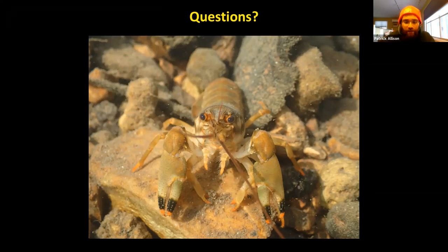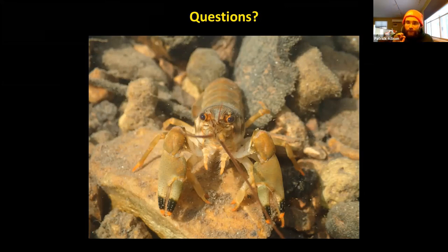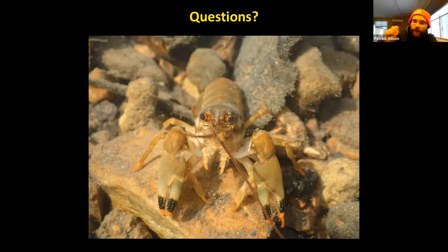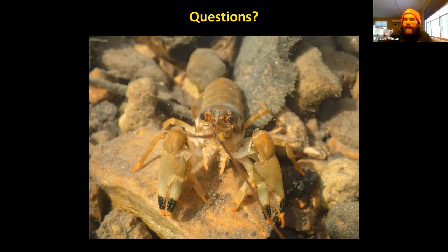A great resource I'll share in the chat is macroinvertebrates.org — that's where the majority of my aquatic insect pictures came from. It's one of the best ways to identify aquatic insects you're collecting. It's a really great visual source to hone in on identification details. You can compare picture keys with drawings, but having a website like macroinvertebrates.org with real photographs makes it much easier.